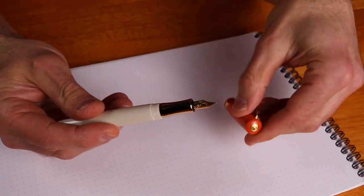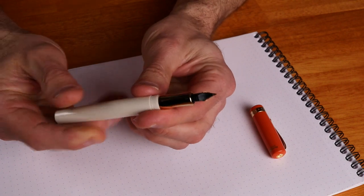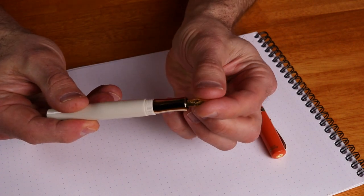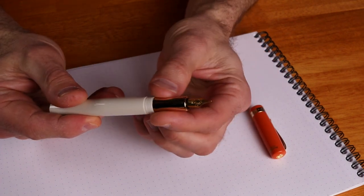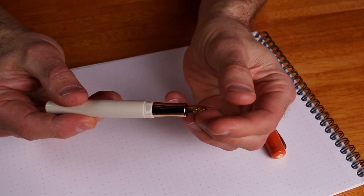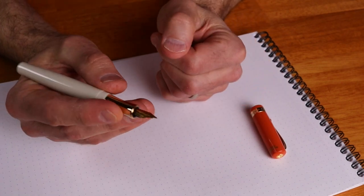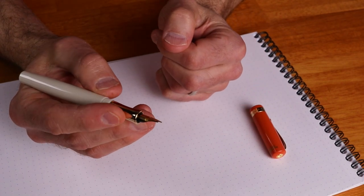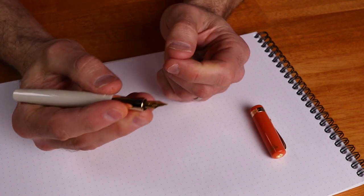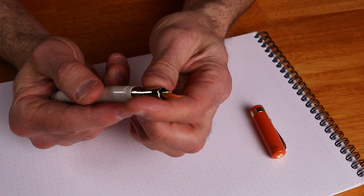When you unscrew the cap and take it off, you'll notice the nib section is actually metal. Some people get discouraged by this because they think it's going to be slippery in the hand, and if you overgrip the nib section, you might find that's a problem. But I've been using the Student on and off for many years and never had a problem. In fact, the metal nib section is quite delightful.